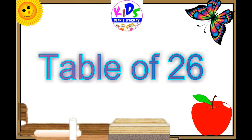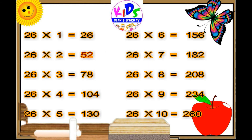Let's repeat. 26 1s are 26, 26 2s are 52, 26 3s are 78, 26 4s are 104, 26 5s are 130.